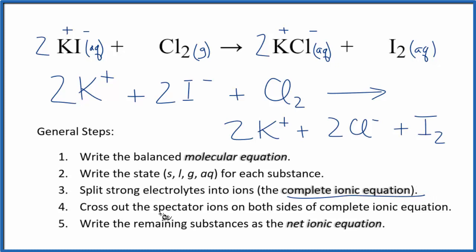From here, we can cross out the spectator ions. These are ions on both sides of this complete ionic equation. So they're the things that are the same on both sides. We have 2K⁺ here, 2K⁺ here. Cross them out. Everything else is unique. We're just going to have to leave it as it is.